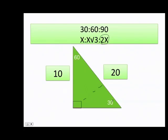Now that I know the value of x — which is the 30-degree side — I can figure out the value of the 60-degree side, which is 10 times the square root of 3.